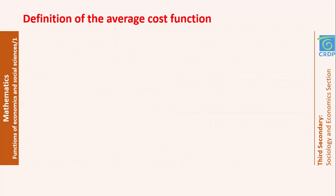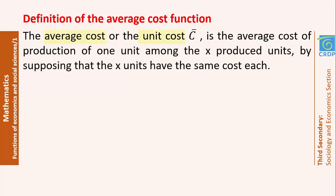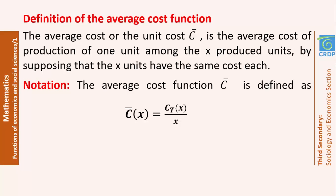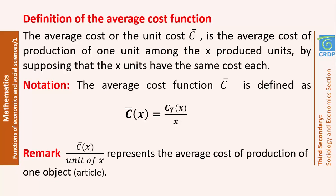What is the average cost function? The average cost, or the unit cost, is the cost of producing one unit among the x produced units. So if I have the cost of producing x units and I want the cost of producing one unit, I divide by x. The average cost function, denoted by c-bar, is defined as c-bar(x) = Ct(x) / x. To find the cost of production of one article, I divide by the unit of x — so if x represents 1,000 articles, I divide the average cost by 1,000.